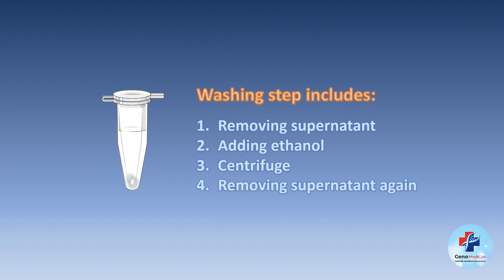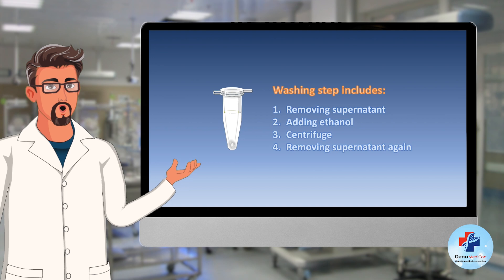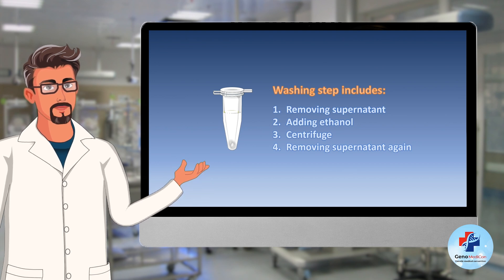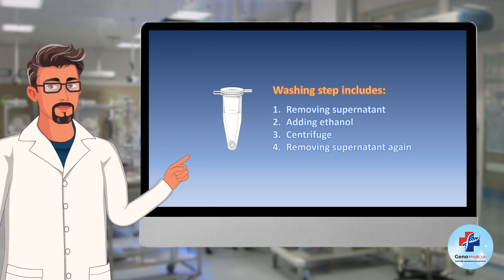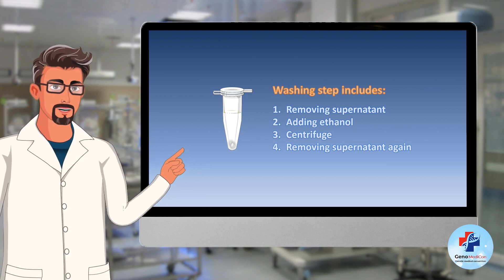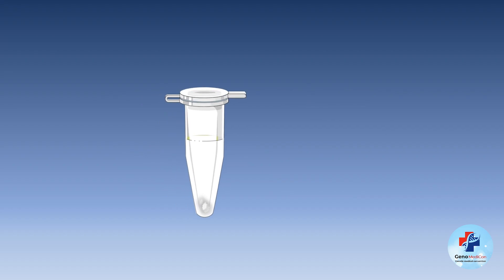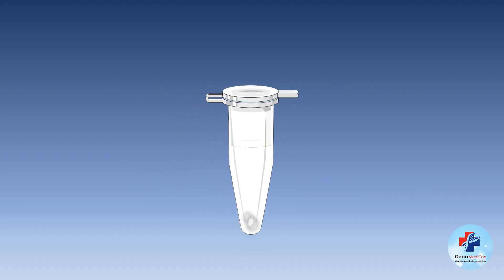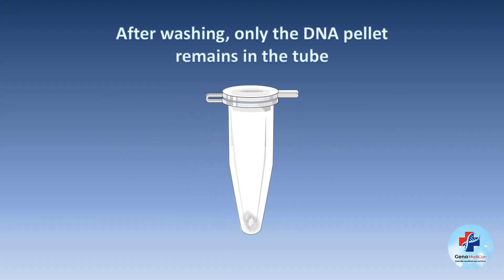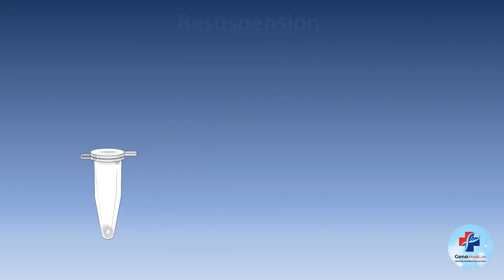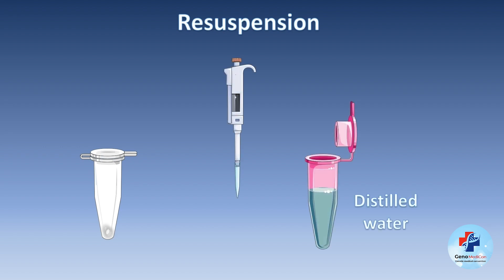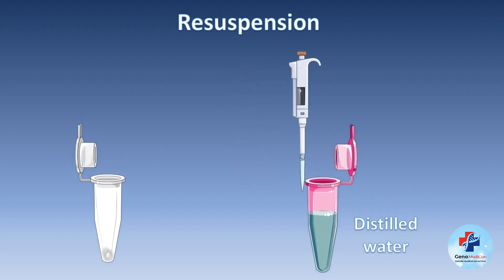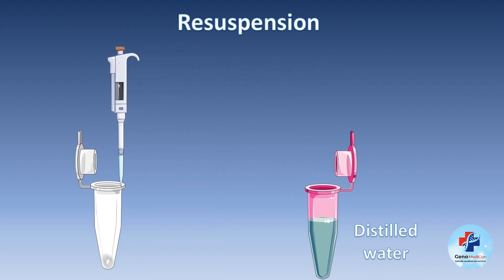To enhance DNA purity, a washing step is introduced. The DNA pellet is carefully washed with a suitable solution, commonly ethanol. This washing step aims to remove residual salts, proteins, and other contaminants that might still be associated with the DNA. Rigorous washing ensures the production of high-quality purified DNA. The final phase involves resuspending the purified DNA pellet into an appropriate buffer or distilled water, ensuring that the DNA is in an optimal state for downstream applications.